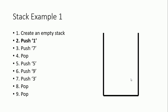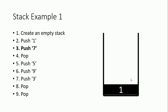Step two is push one — add the number one to the stack. Step three is push seven — add seven to the stack. Step four is pop. Which value do we remove? As previously discussed, pop removes the topmost value, so we remove number seven.